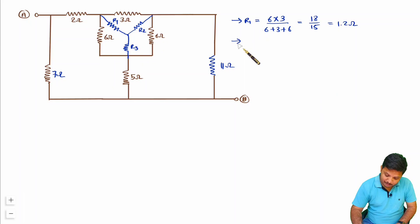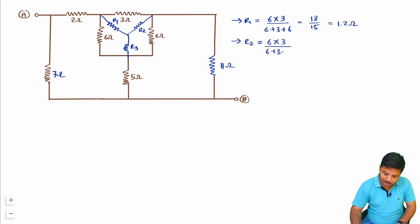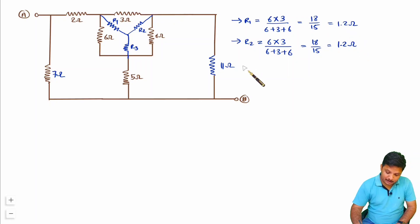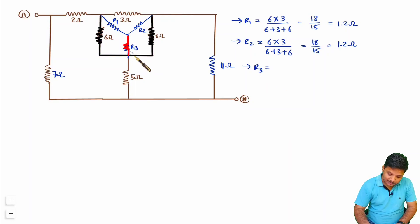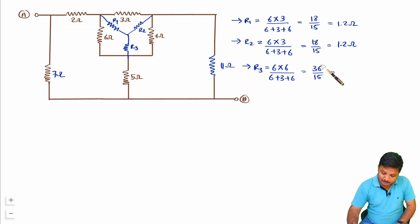Now let us find the value of R2. R2 is the multiplication of its adjacent resistors, which are 3 and 6. So 6 into 3 divided by the addition of all 3 resistors: 6 plus 3 plus 6. That is again 18 by 15, so that is 1.2 ohm. For R3, it is the multiplication of its adjacent resistors: 6 into 6 divided by 6 plus 3 plus 6. That is 36 divided by 15, which gives 2.4 ohm.